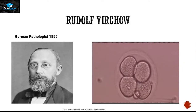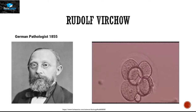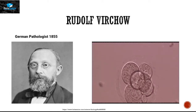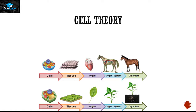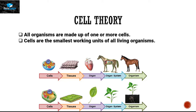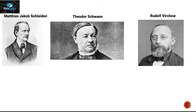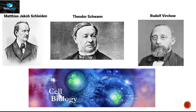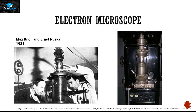Then in 1855, a third German physiologist, Rudolf Virchow, recognized that cells were dividing under his microscope and detected that cells come from pre-existing cells. With the work of these three German scientists, we got the cell theory. The cell theory has three clauses: first, all organisms are made up of one or more cells; second, cells are the smallest working unit of all living organisms; and third, cells come from pre-existing cells.